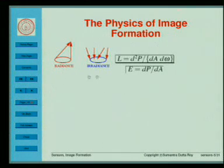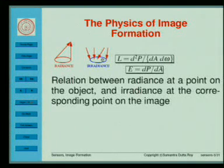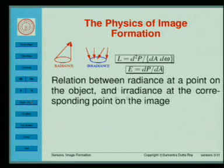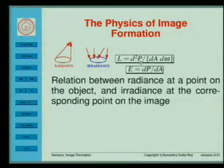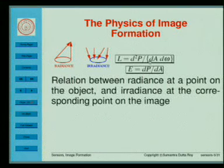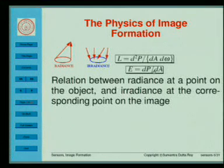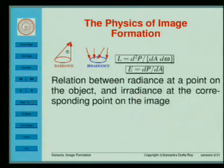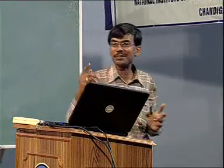Irradiance is defined as the differential power per unit area. The difference between irradiance and radiance: essentially what we want to find out is the relation between the radiance at a point on the object and the irradiance of a corresponding point in the image. Radiance is just like money — when it is coming in we are not worried about the direction, but when it is going out we are definitely worried about the direction. That is one easy way to remember the difference between radiance and irradiance.